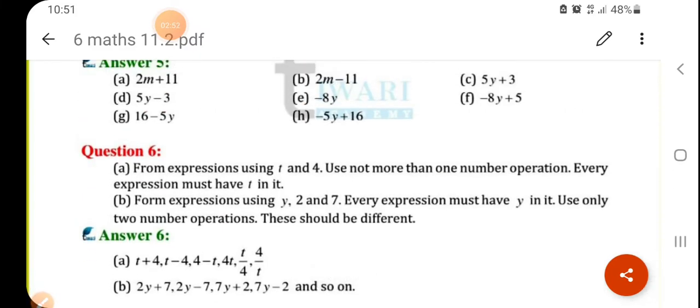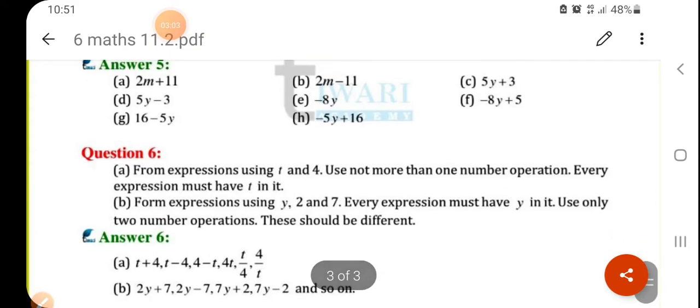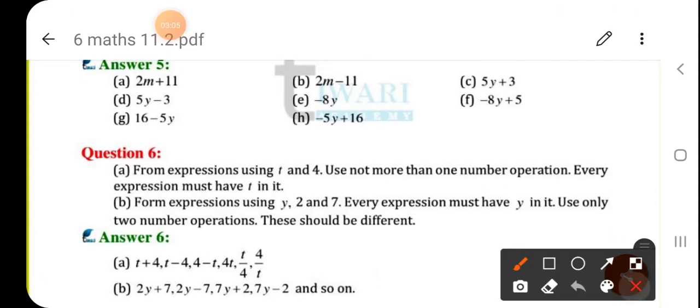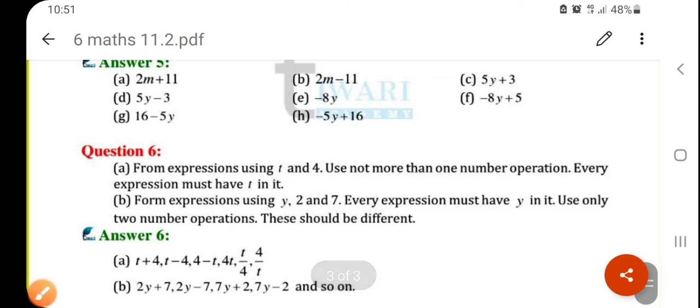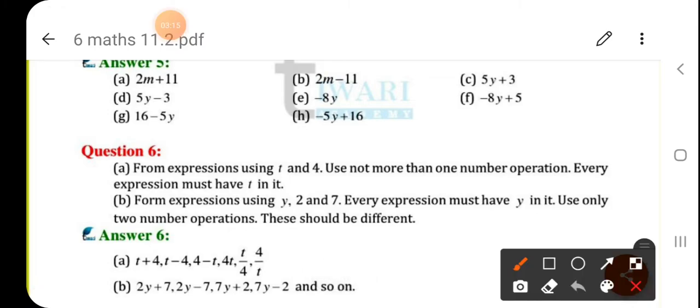Next, question number 6. Form expressions using T and 4. So here it is form, not from. Form expressions using T and 4. Use not more than one number of operation. Every expression must have T in it. You have to make expressions, you have to use only one operation, and T should be there in each and every expression.